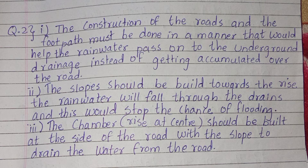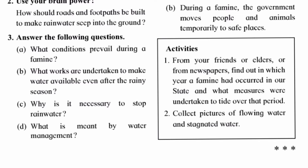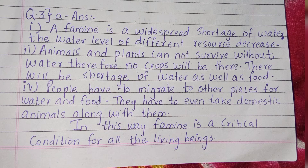Second point: The slopes should be built so that rainwater falls through and this would stop the chance of flooding. Third point: A chamber built at the side of the road with a slope should be constructed to drain the water away.